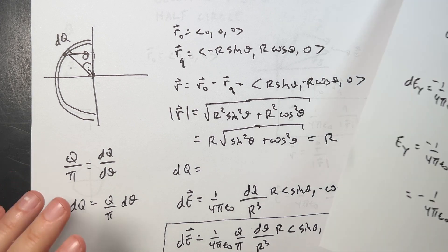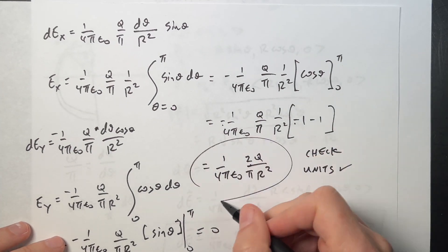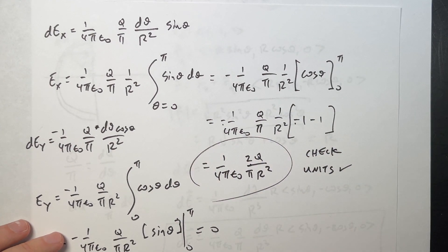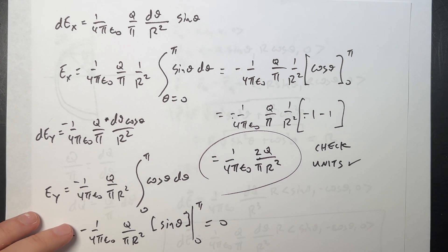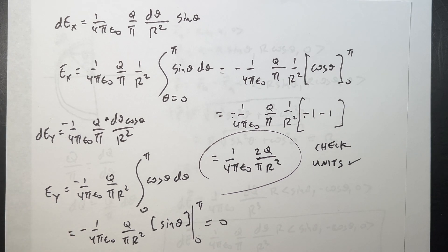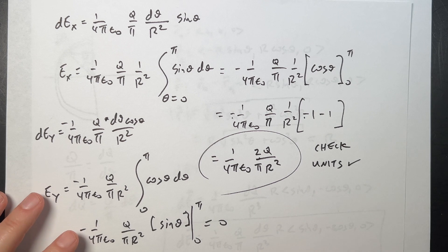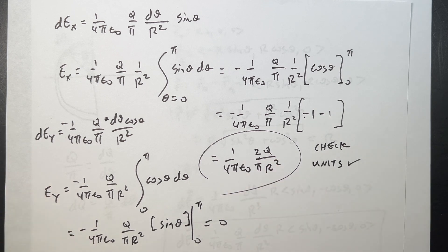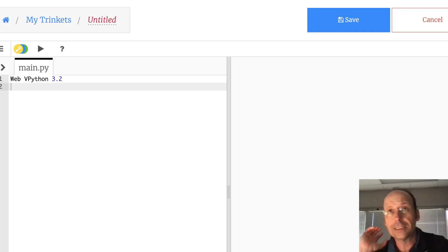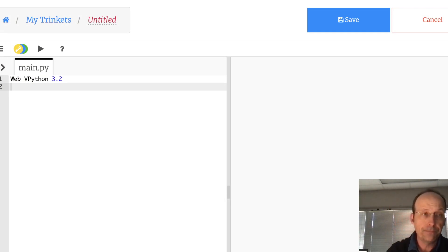So the electric field at the center of the half-ring is E = (1 / 4π ε₀) × (2Q / π R²) in the X direction. Now I want to break this into a finite number of pieces and find the electric field numerically with Python — it's useful to do it both ways.